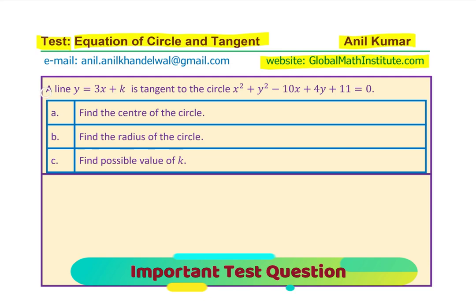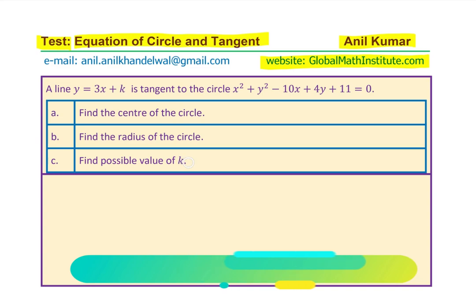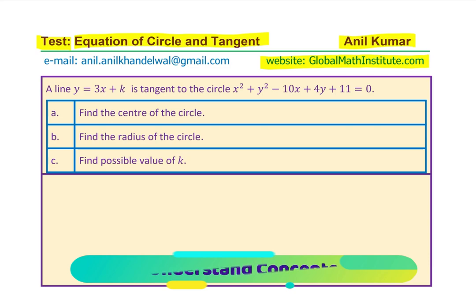The question is: a line y equals 3x plus k is tangent to the circle x² + y² − 10x + 4y + 11 = 0. Find the center of the circle, find the radius of the circle, and find the possible value of k. This line is tangent to the circle. You can always pause the video, answer the question, and then look into my suggestions.